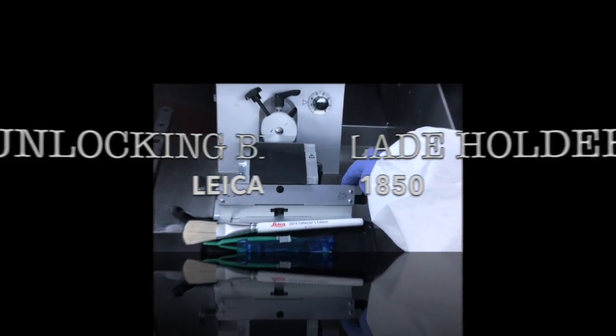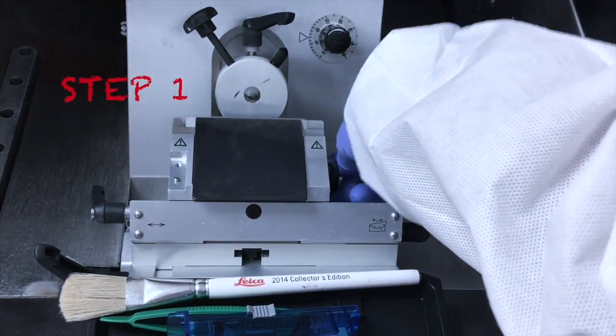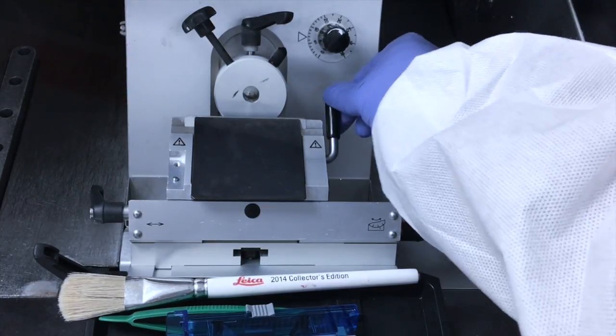Unlocking blade holder for the Leica 1850. Step 1. Pull rubber tipped blade clamp lever on right side towards you.